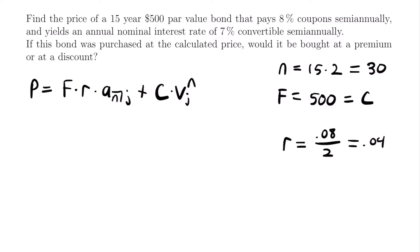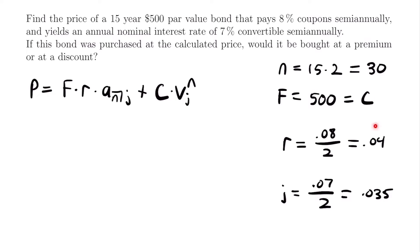The same applies to our yield rate. We're told the bond yields an annual nominal interest rate of 7% convertible semi-annually. To convert this to an effective semi-annual rate, J equals 0.07 divided by 2, which equals 0.035. From this point forward, I'll immediately divide those percentages by 2 to get their actual values. We now have all the values we need and can plug them into our price formula.